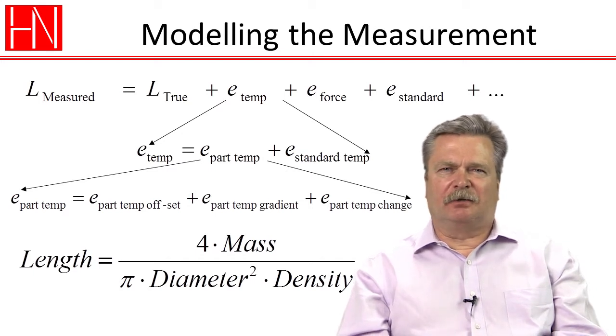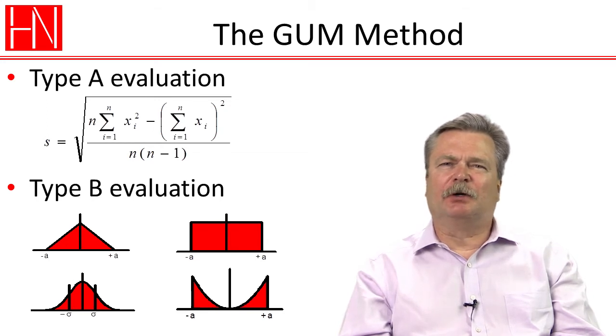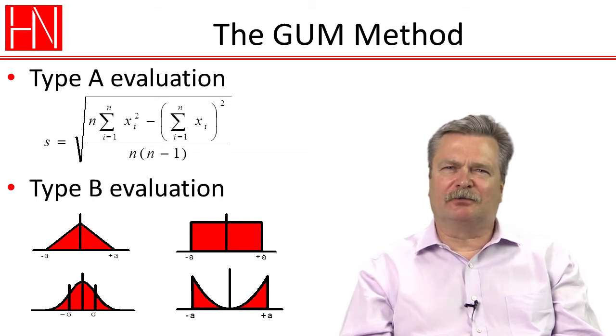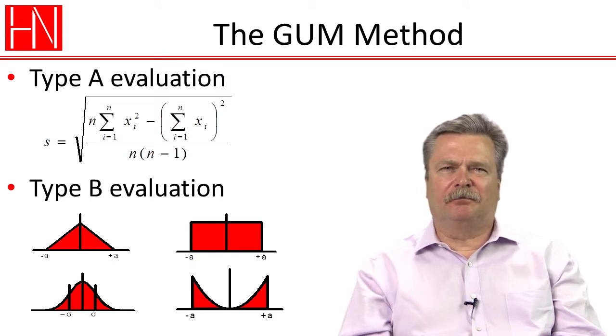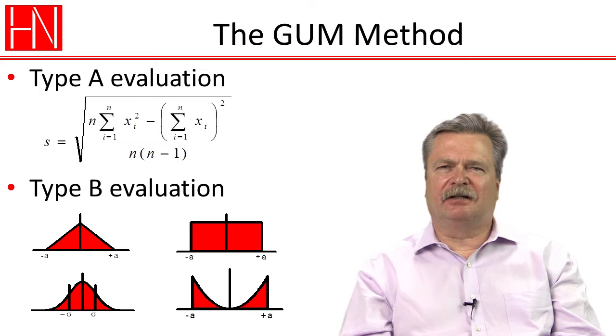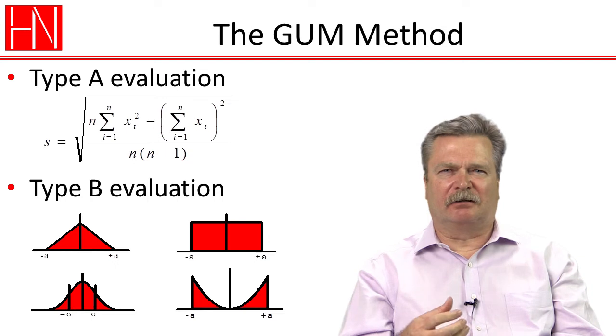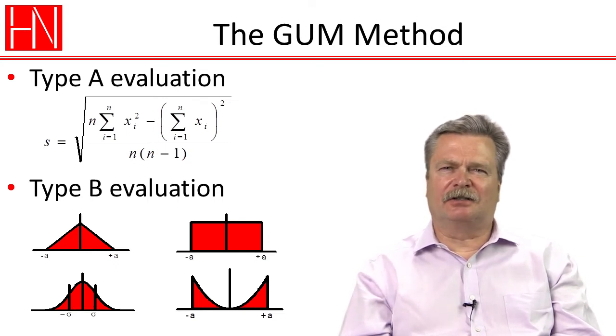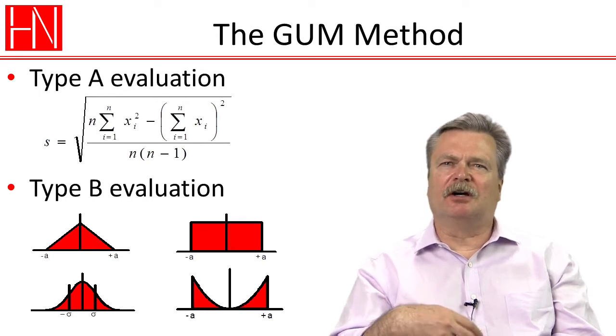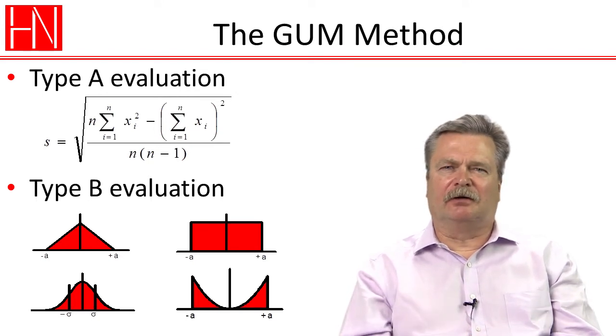Then, we talked about the core of it, which is the GUM method. And I'm sure you know by now that GUM stands for the Guide to Expression of Uncertainty in Measurement. And how that is fundamentally built on the idea that there are two different ways of evaluating uncertainty contributors. One that we call, or that GUM calls a Type A evaluation, where you calculate the standard deviation directly from repeated observations. That is, you make a number of measurements, and then you calculate the standard deviation, typically through a spreadsheet.